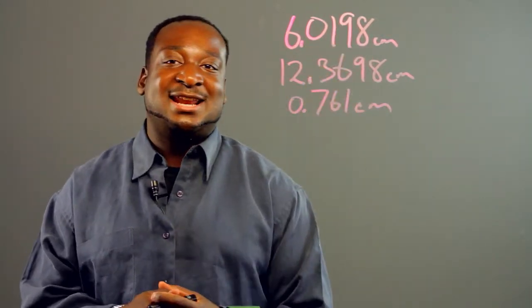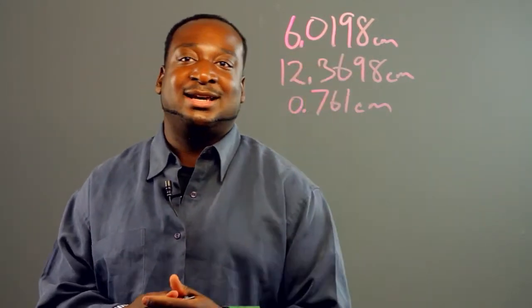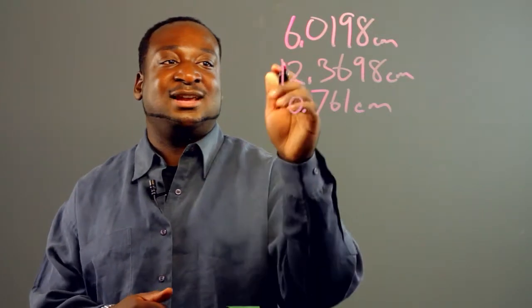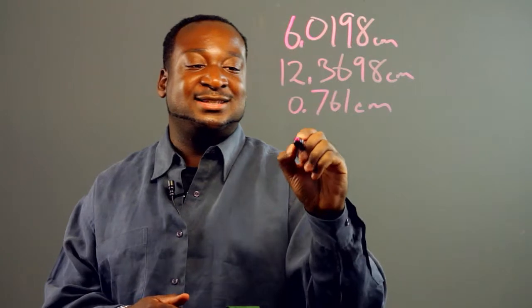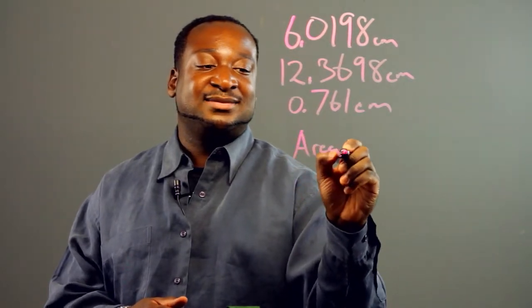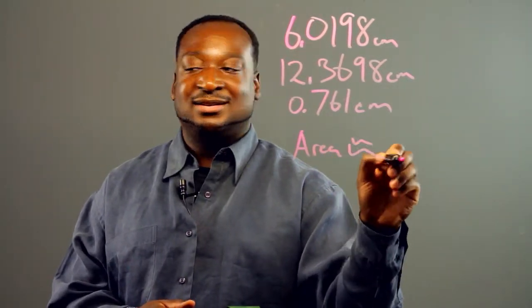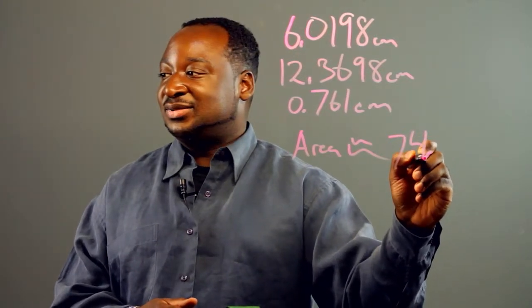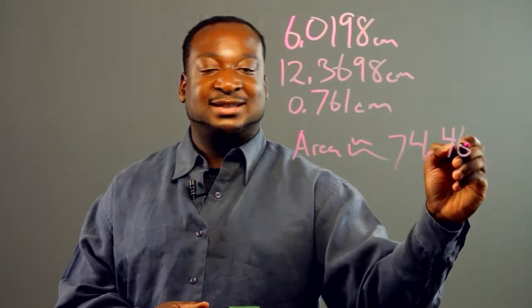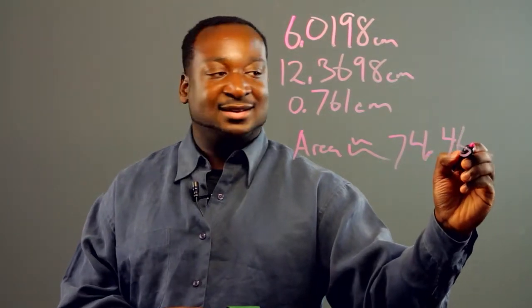And once we had that, I had them calculate the area, the area of the front of the phone, so multiplying these two, so the area you get approximately 74.4637.